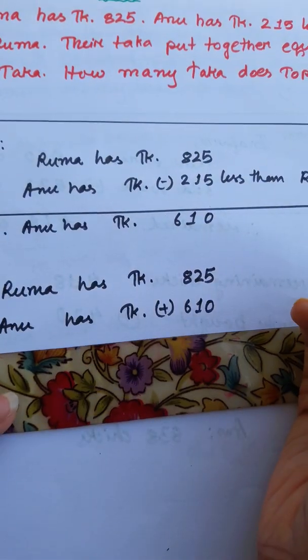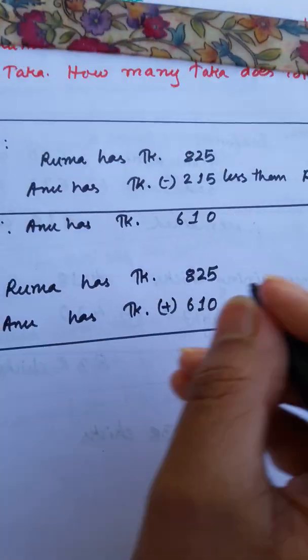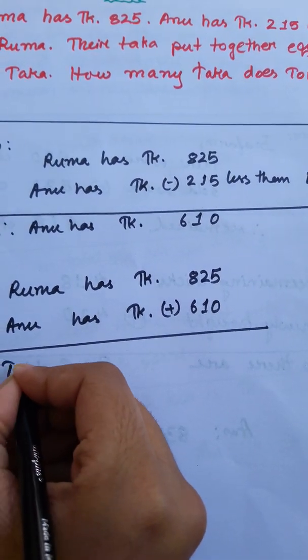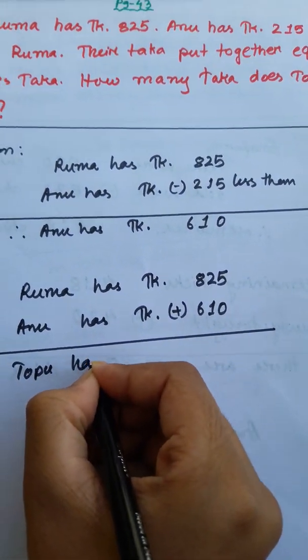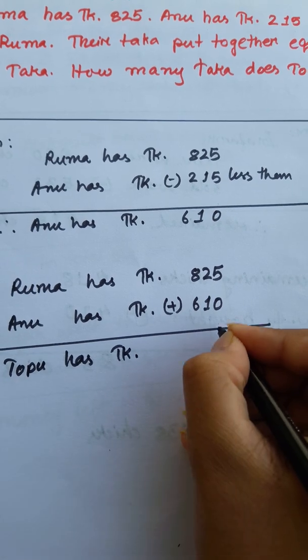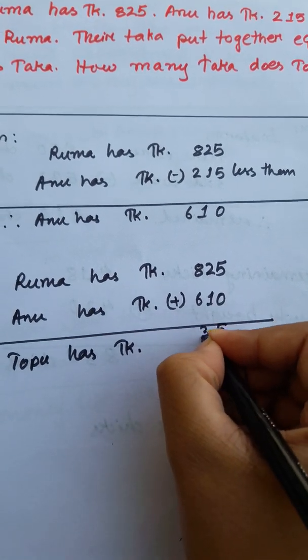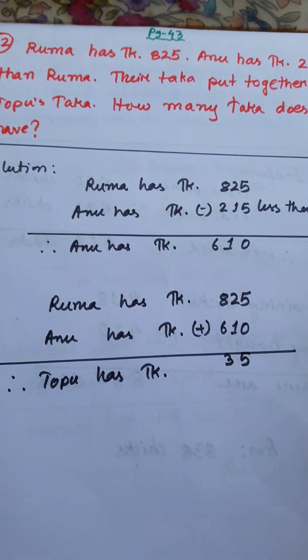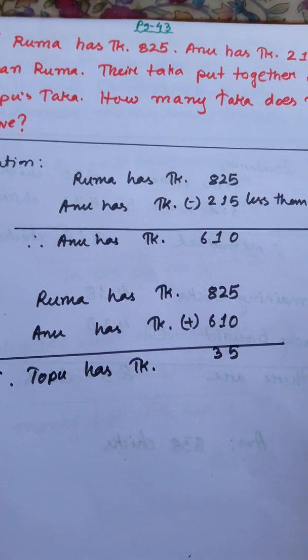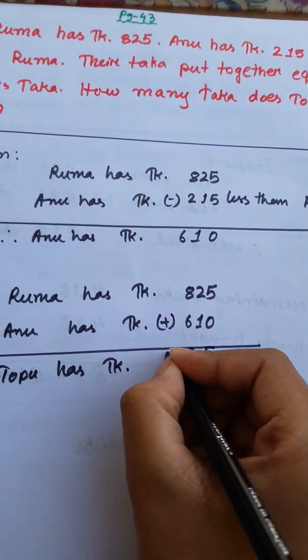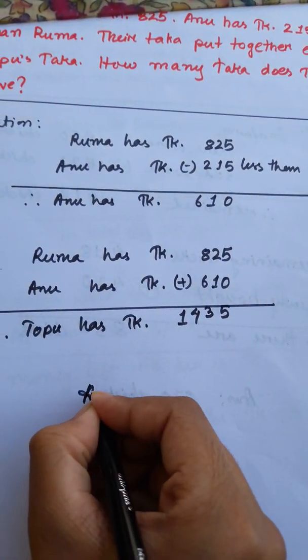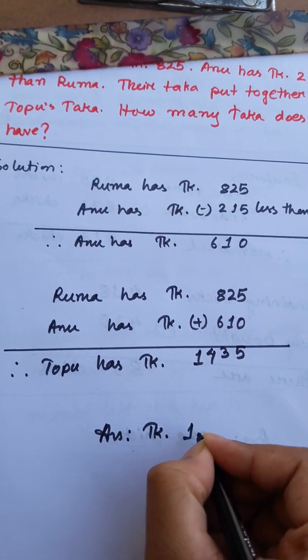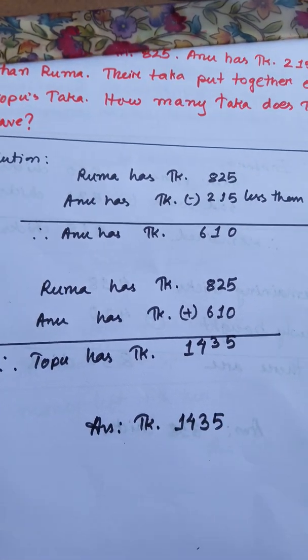Therefore, Topu has Taka 1435. Answer: Taka 1435.